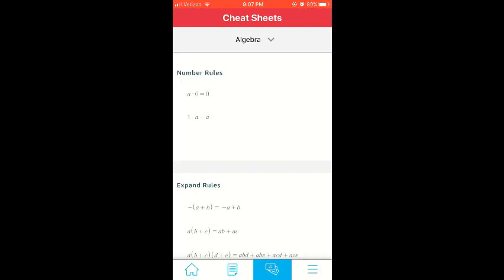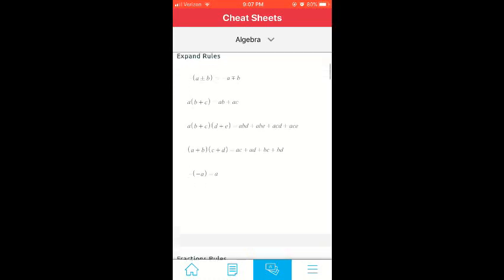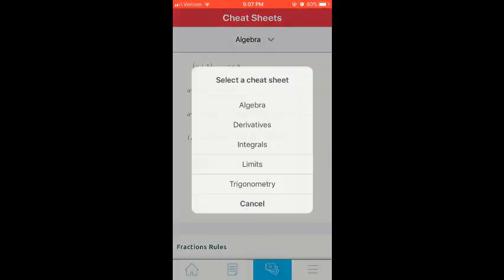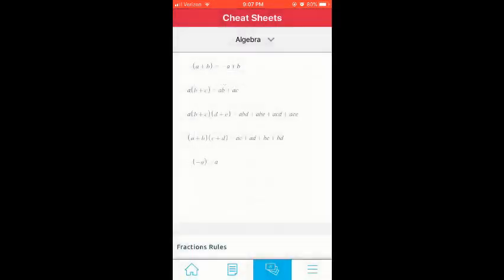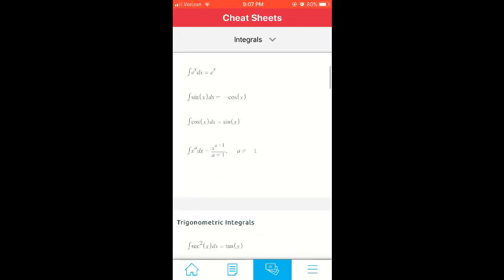Here you'll find helpful identities, formulas, and rules. In order to find the cheat sheet you are looking for, click the drop-down list at the top and select the topic you are interested in.